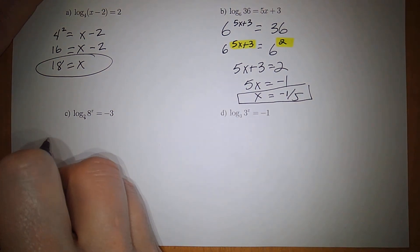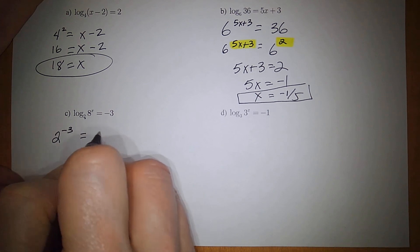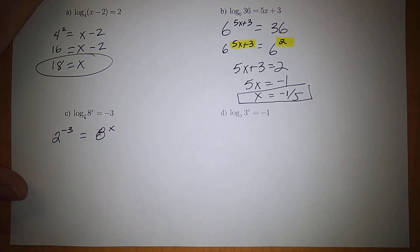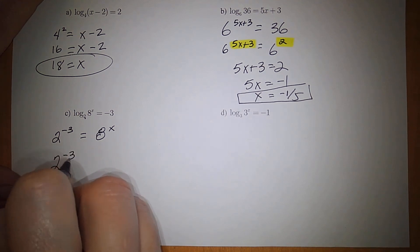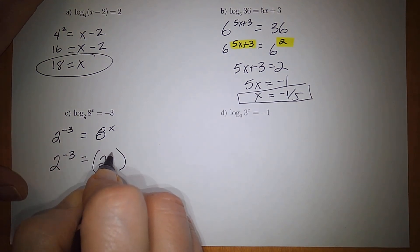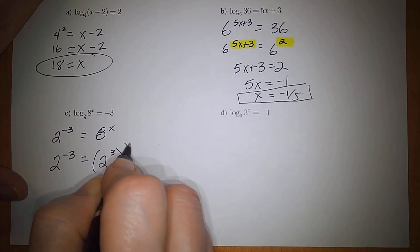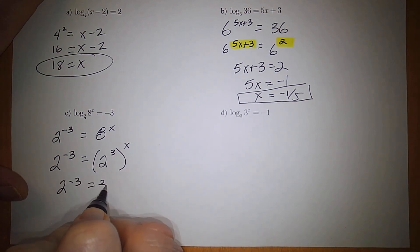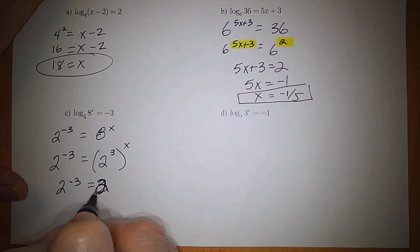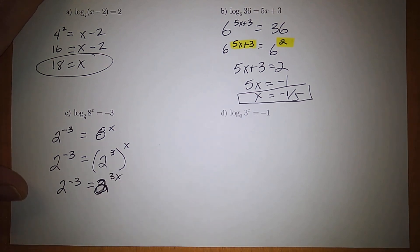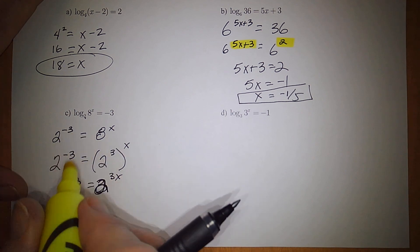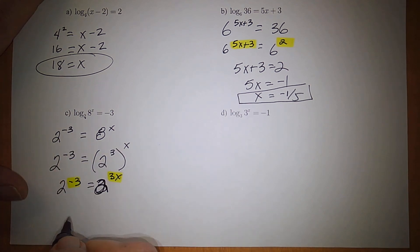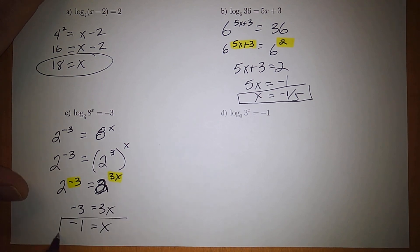For the third equation: 2 to the negative 3 equals 8 to the x. Getting the bases to match, 8 is 2 to the 3rd, so 8 to the x equals 2 to the 3x. Now both sides have base 2, so set exponents equal: negative 3 equals 3x. Dividing by 3 gives x equals negative 1.